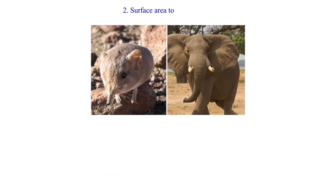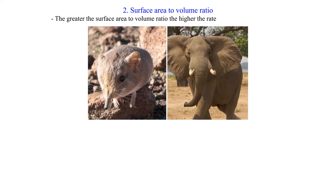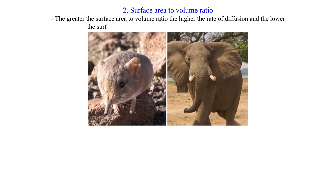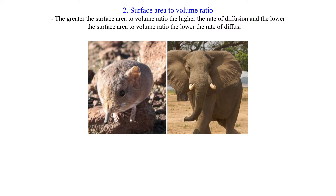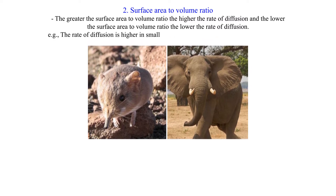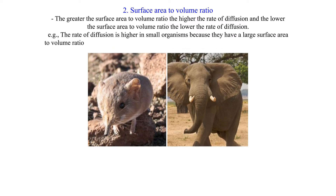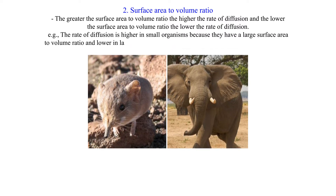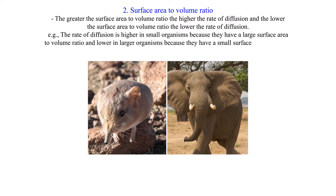2. Surface area to volume ratio: The greater the surface area to volume ratio, the higher the rate of diffusion, and the lower the surface area to volume ratio, the lower the rate of diffusion. For example, the rate of diffusion is higher in small organisms because they have a large surface area to volume ratio, and lower in larger organisms because they have a small surface area to volume ratio.